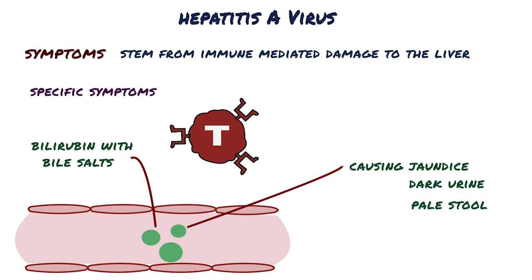The disease in children is generally milder than that in adults and is usually asymptomatic. Complete recovery occurs 99% of the time, within 2 to 4 weeks from the onset.